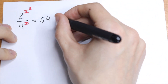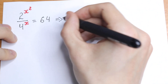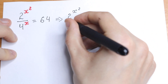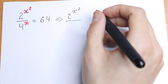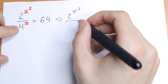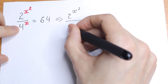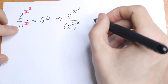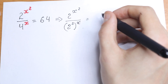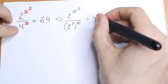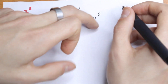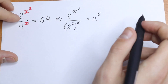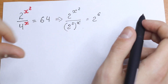So let's simplify this a little bit. We will have 2 to the power x squared — that stays the same. And we write this 4 as 2 squared, raised to the power x, in our denominator. And we write our 64 as 2 to the sixth power. If we multiply 2 six times we get 64. Now we have 2 everywhere.